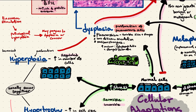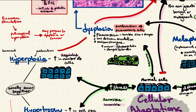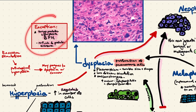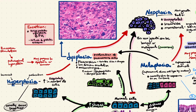Hyperplasia is regulated, meaning it's a response to a stimulus, and excessive stimulation can lead to pathological hyperplasia. This pathological hyperplasia may progress to dysplasia or cancer. However, there is an exception: benign prostatic hyperplasia does not increase the risk of prostatic carcinoma and will not progress to dysplasia or neoplasia.